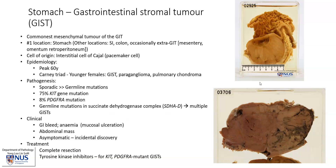Clinically, the patients may be asymptomatic, and often the discovery is incidental — perhaps imaging of the abdomen for another reason. Sometimes, as you saw here, there can be erosion or ulceration into the overlying mucosa, giving rise to GI bleeding, and also if the tumor is large, there may be an abdominal mass. Treatment is complete resection in resectable cases.